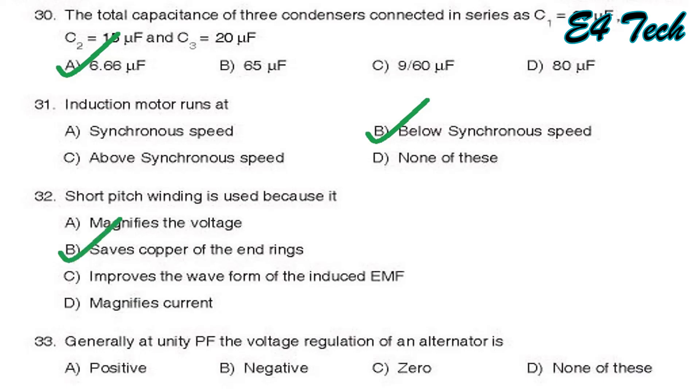Generally at unity power factor, the voltage regulation of an alternator. Unity power factor voltage regulation, it will be positive voltage regulation. That is option A, positive.